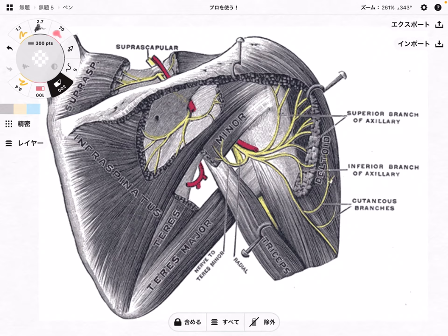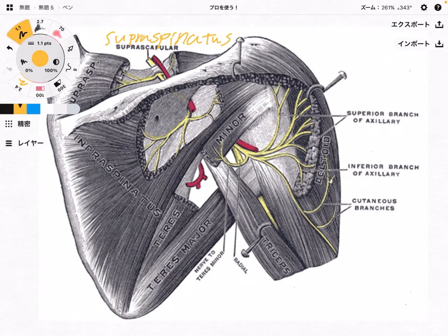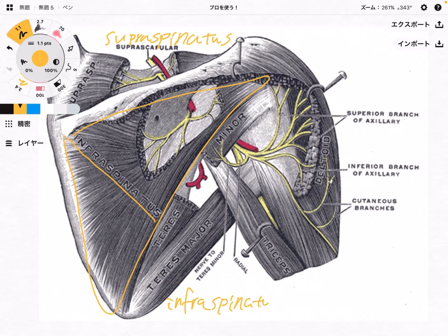I'm going to explain the muscles very quickly. The first one is supraspinatus — one of the rotator cuff muscles. Then if we have supraspinatus, we have infraspinatus as well. This is infraspinatus, also one of the rotator cuff muscles.